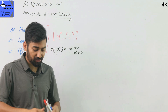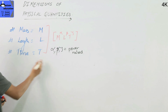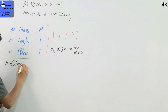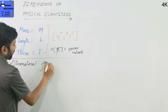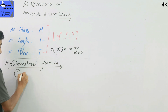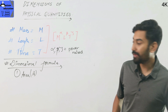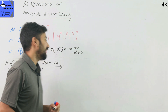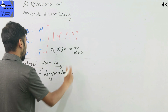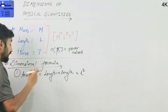This is the first example — the dimensional formula for area. The symbol for area is A. The dimensional formula for area is length into length, so it is length times length. Area equals L into L, which gives us L squared.